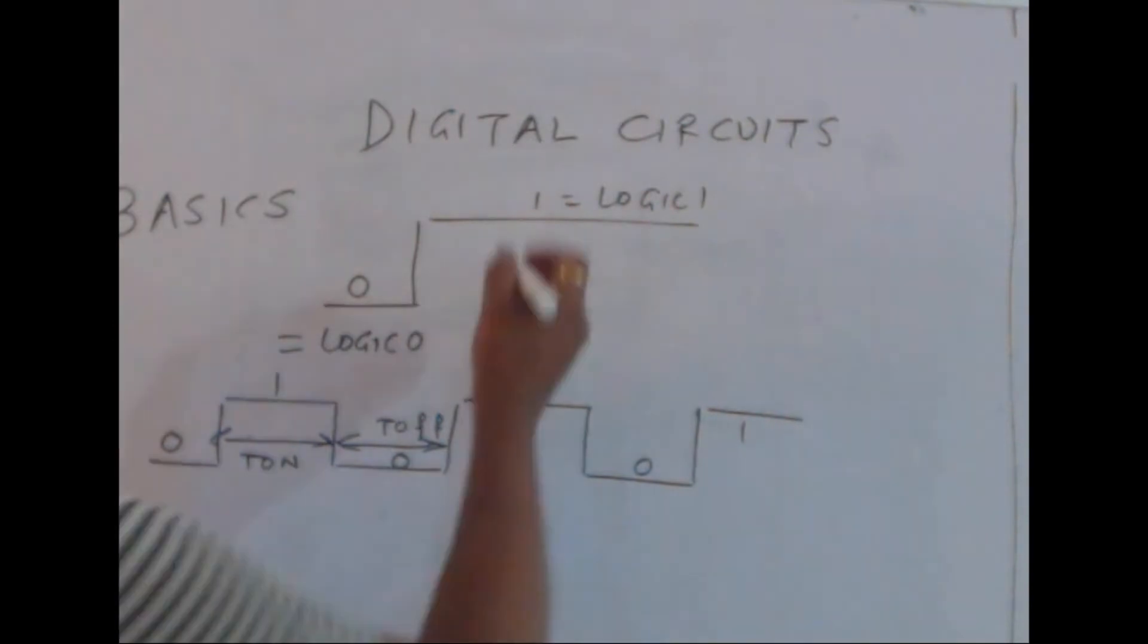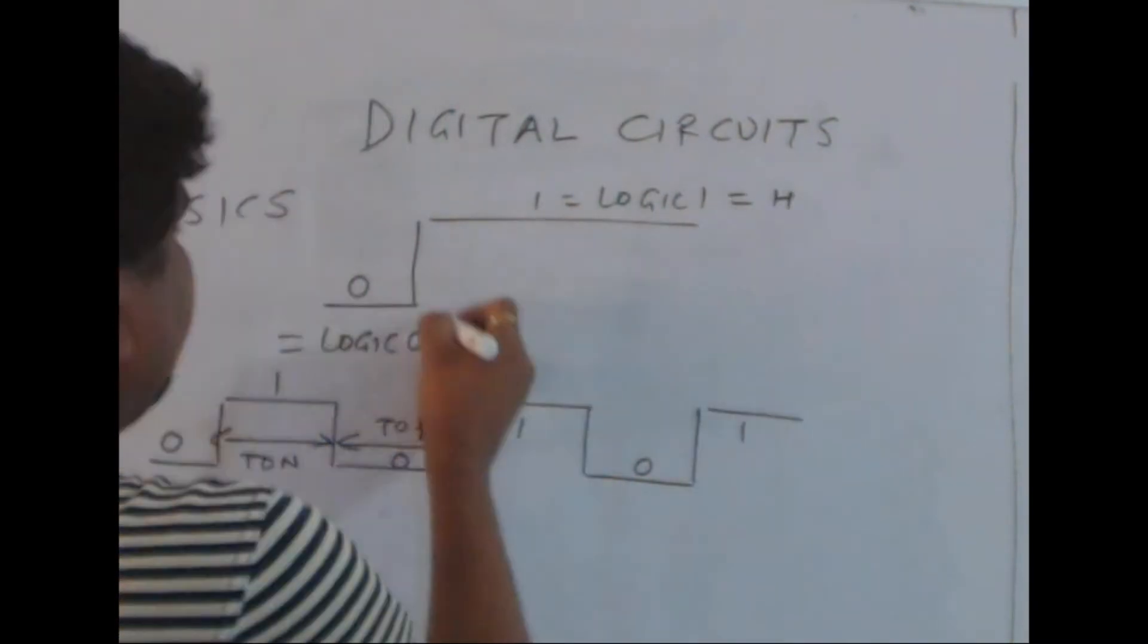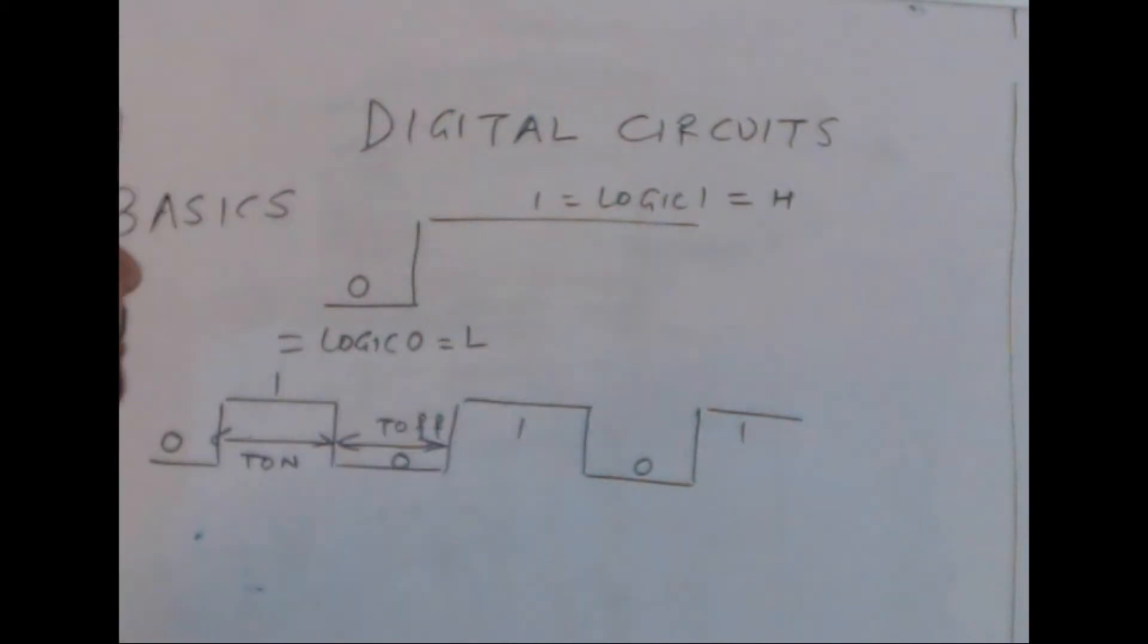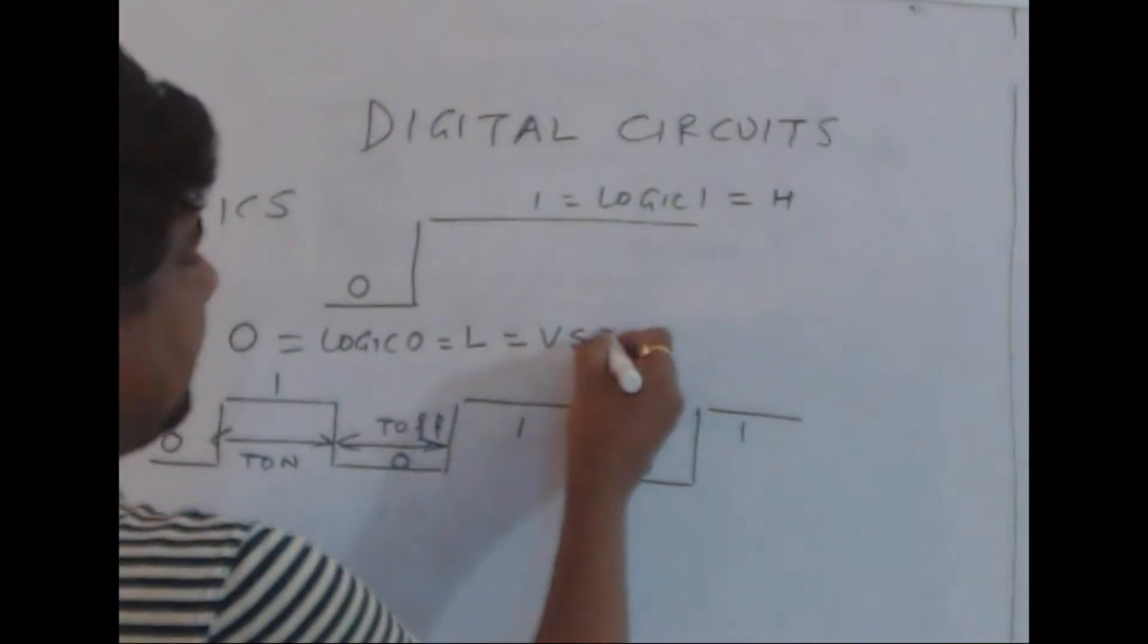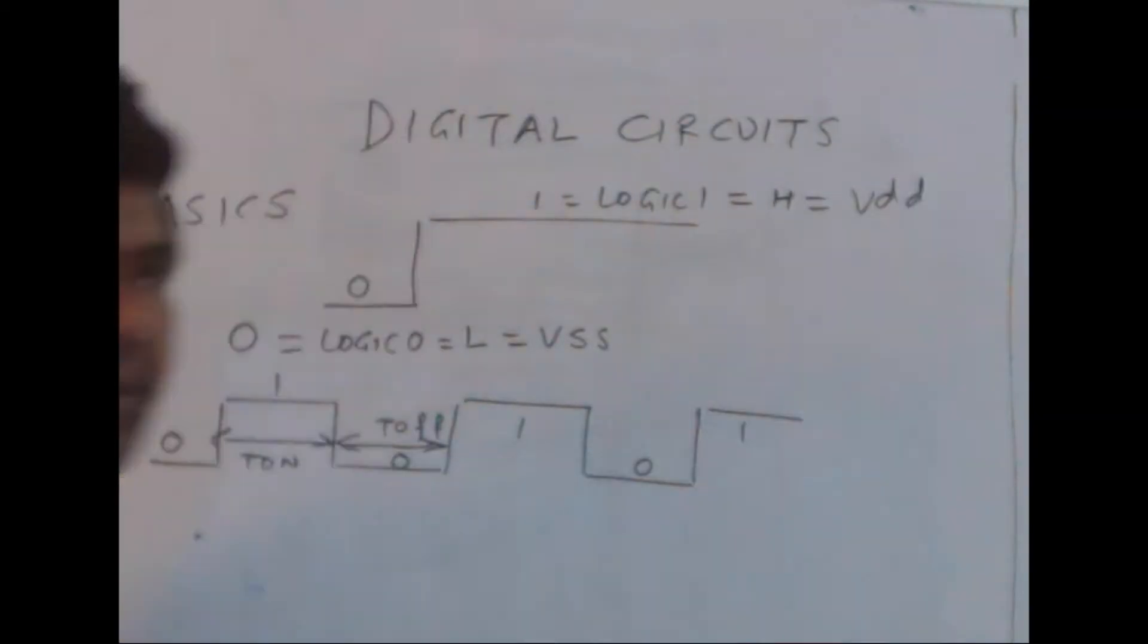In literature, 1 is also called high level logic, and 0 is called low level logic. Logic 0 indicates VSS, logic 1 indicates VDD as far as CMOS terminology is concerned.